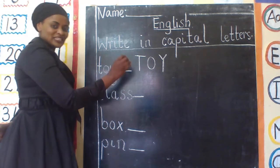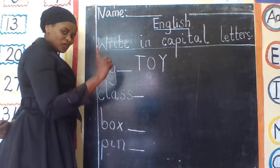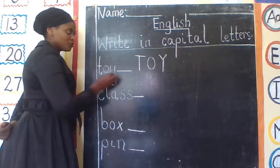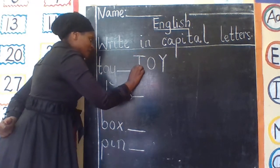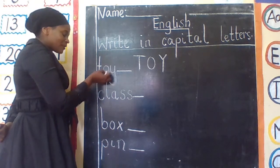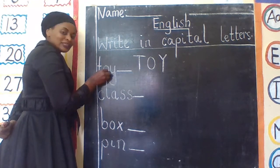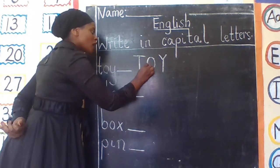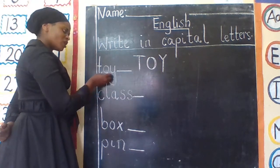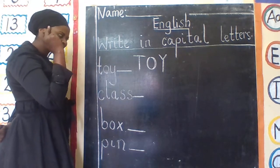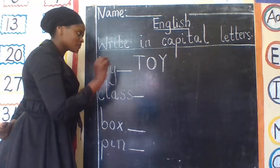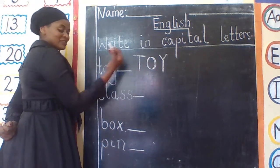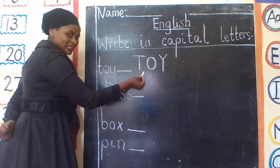You have been told to change this word into capital letter. You go step by step. You start with T — you write capital letter T. Then you look at the next letter, O, and write capital letter O. After O is Y. You think about how to write capital letter Y. It's the same shape but this one is small letter and this one is capital letter.